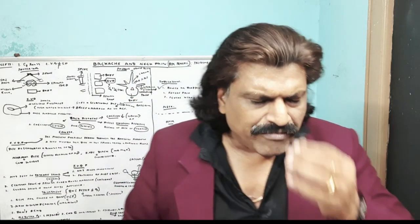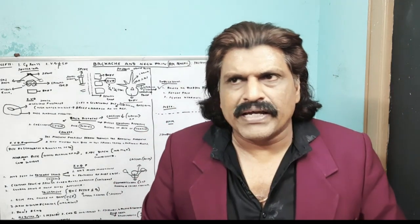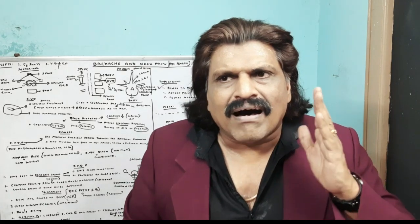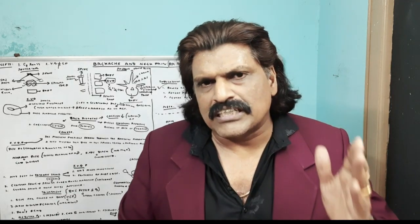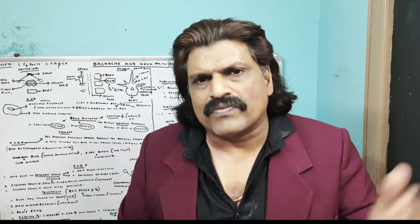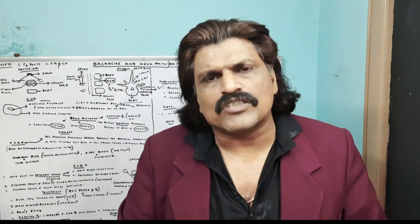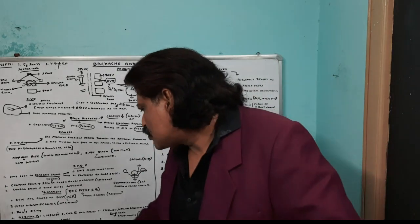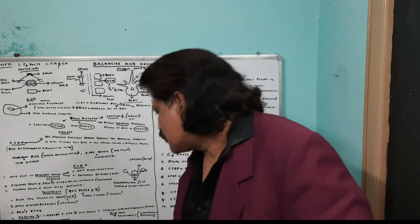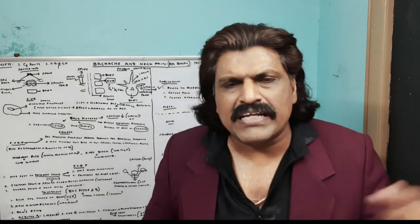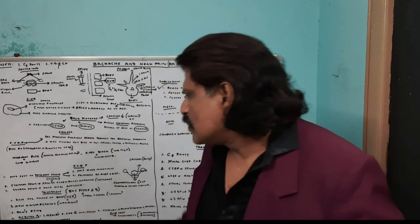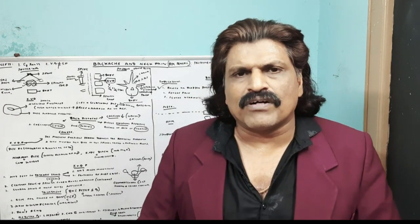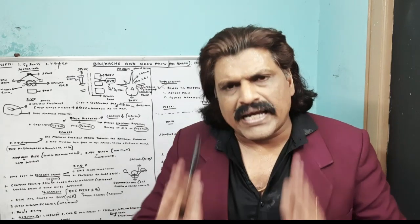Another treatment is spinal cord stimulation, based on the gate theory of pain. When large fibers in the posterior column are stimulated — carrying position, joint, and vibration sensations — they block pain impulses carried by the small fibers in the spinothalamic tract. Stimulating the posterior column closes the gate for pain transmission through the spinothalamic tract, reducing pain without interfering with the disc prolapse process itself.